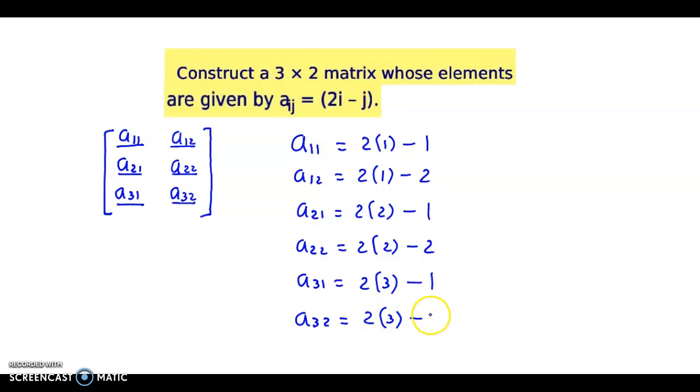2 into 1, that is 2 minus 1 equals 1. 2 into 1, that's 2 minus 2 equals 0. Then 2 times 2 is 4 minus 1 is 3. 2 times 2 is 4 minus 2 equals 2. Then 2 times 3 is 6 minus 1, that is 5. And 2 times 3 is 6 minus 2, that is 4.